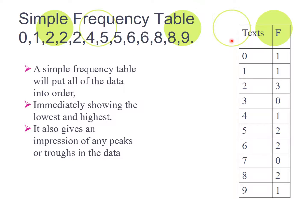So this is the information we took from the previous slide. So how many people sent zero texts per week? There was one person who sent zero texts per week. There were one person who sent one text a week. There were three people who sent two texts per week. There were zero people that sent three texts per week. So it's as important to put in the zeros in here as it is to put in the ones. So it's very important that you put that. So you can clearly see within a simple frequency table the lowest value was zero and the highest value was nine.